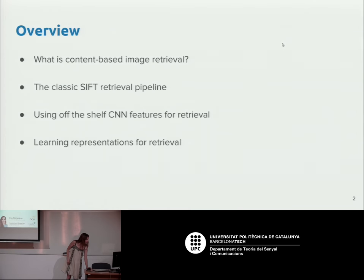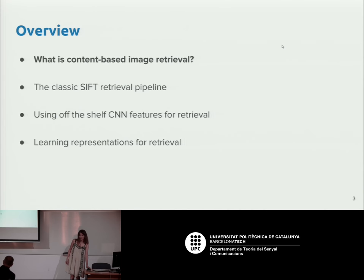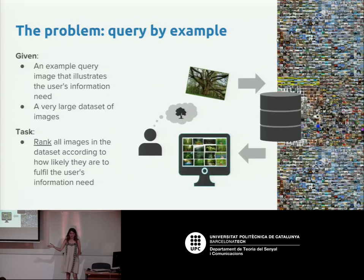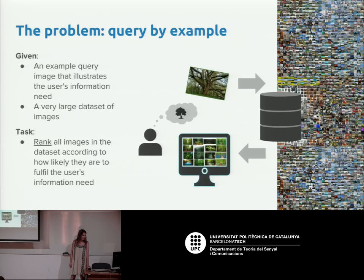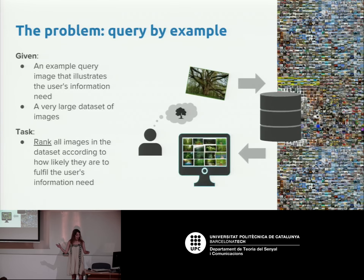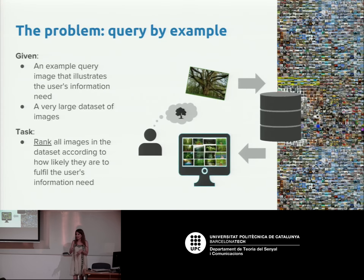I'll start by talking about the task itself — what is content-based image retrieval. The task is simple: you have a large dataset of images and you have something in mind that you want to search, for example a particular tree. The task is to retrieve all images that are relevant to that visual query, and for doing that you just analyze the pixels on the images, not using any text data or metadata associated to them.